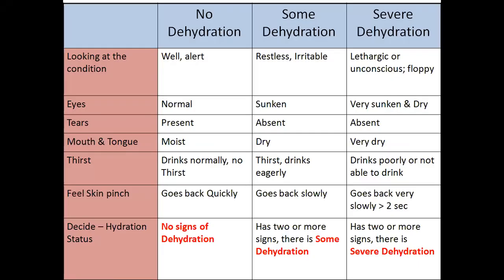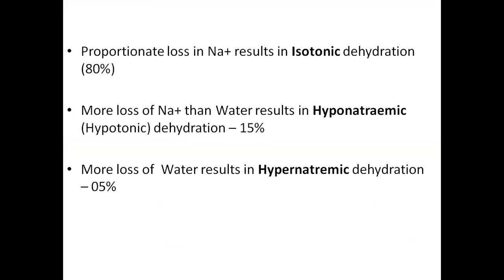This is the most important slide in the topic of diarrhea. Diarrhea is divided based on dehydration: no dehydration, some dehydration, and severe dehydration. Condition-wise: well, alert, restless, irritable, and lethargic. For eyes: normal, sunken, and very sunken. Skin pinch goes back quickly in no dehydration, slowly in some dehydration, and very slowly - more than two seconds - in severe dehydration.